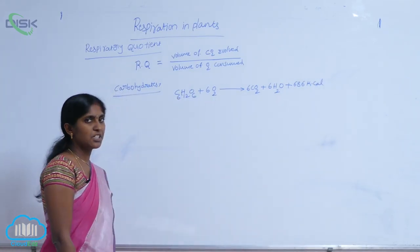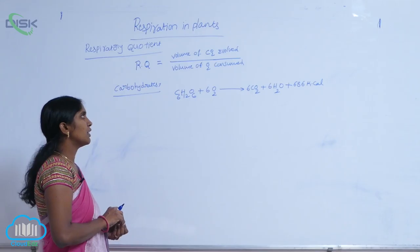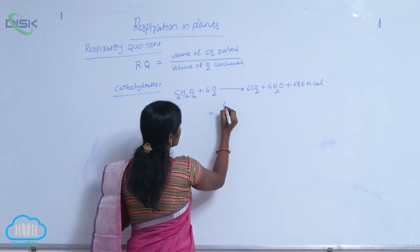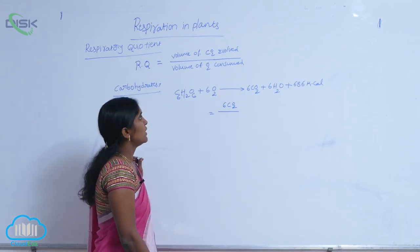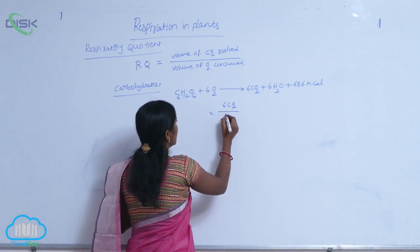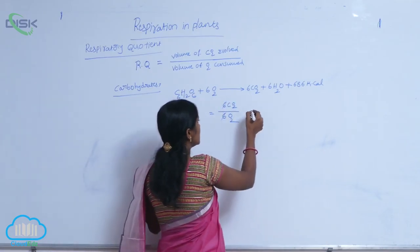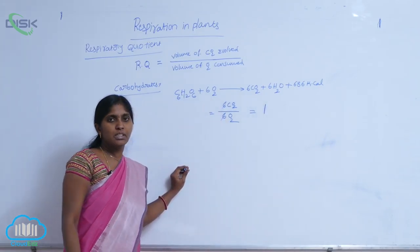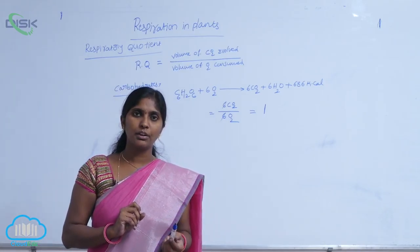So in this reaction, evolved CO2 and consumed O2. How much CO2 is evolved and O2 is consumed for carbohydrates oxidation? That is 6O2. So the 6 and 6 both are cancelled, that is equivalent to 1. It means respiratory quotient of carbohydrates is equivalent to 1.